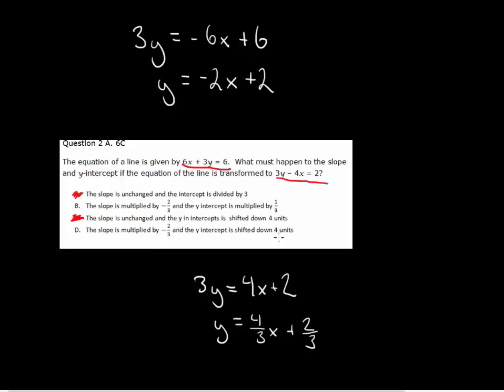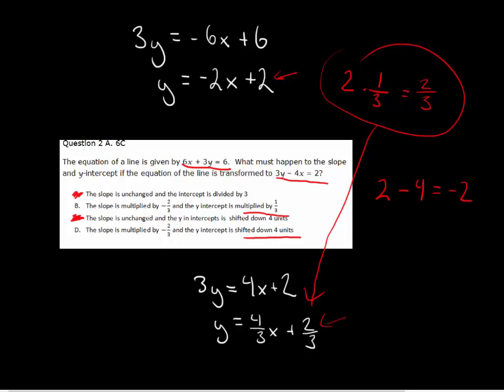Now, we've got to choose between C and D and the difference there is between the y-intercept. So if here, our y-intercept is 2 and here, the y-intercept is 2 thirds, let's try out both. Either 2 has been multiplied by 1 third or 4 has been taken away from 2. Well, if you do the math, this one matches, so the answer has got to be B.